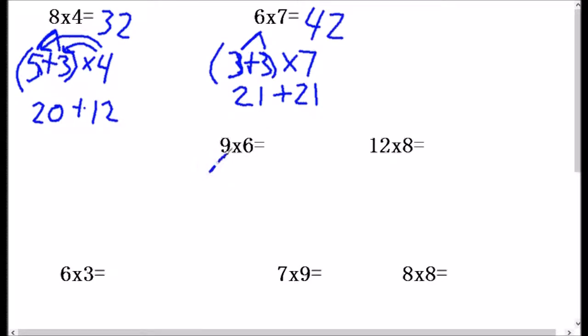9 times 6. Well, let's break this 9 up into 5 plus 4 times 6. Which is 6 times 5 is 30. And 6 times 4 is 24. And we get a total of 54.